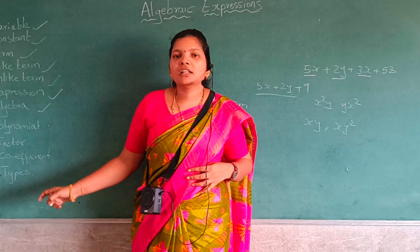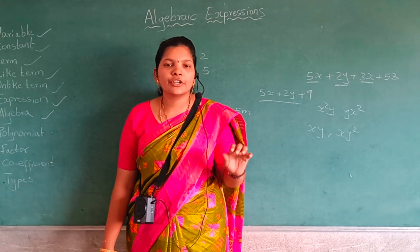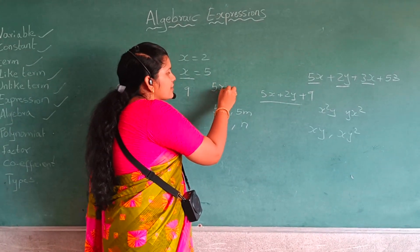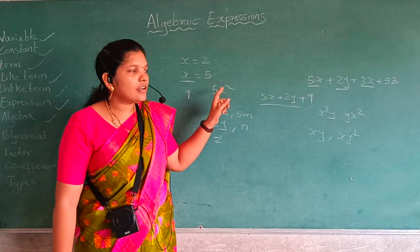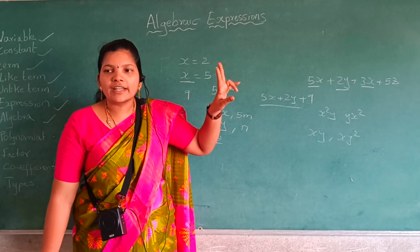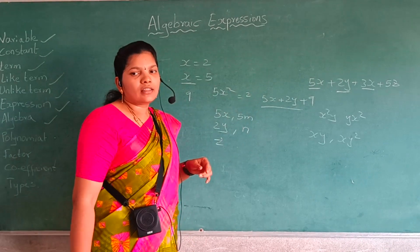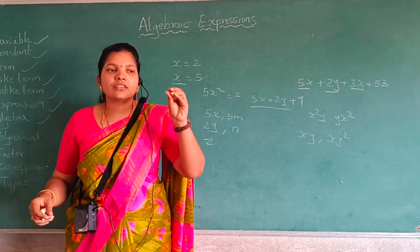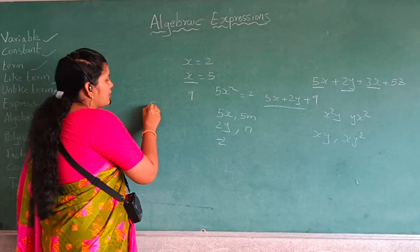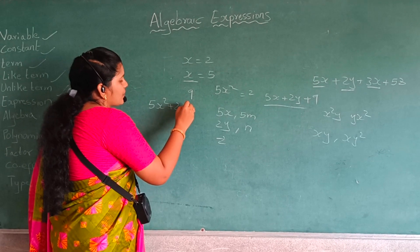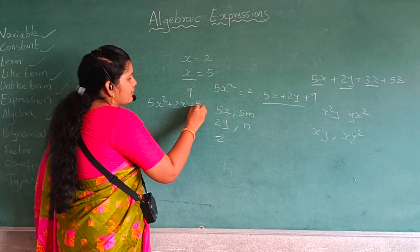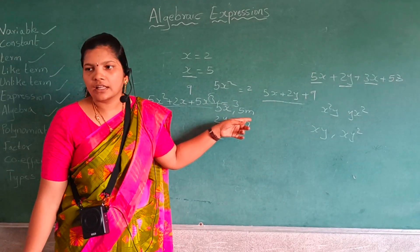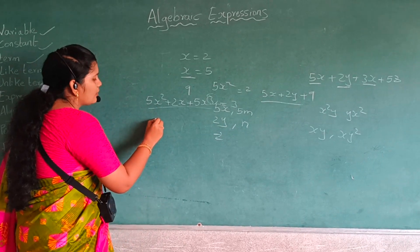And then what is a polynomial? A polynomial is an algebraic expression having a positive degree. First of all, what is degree? In the term 5x squared, the x squared has power 2, so the degree is 2. The highest power of a term or an expression is called its degree. For example, in 5x squared plus 2x plus 5x cubed, the highest degree is x cubed, so the degree is 3.